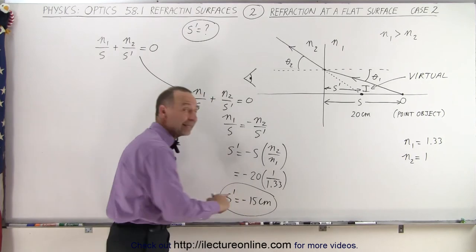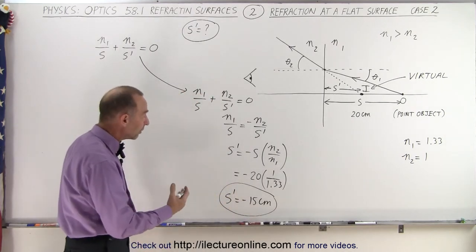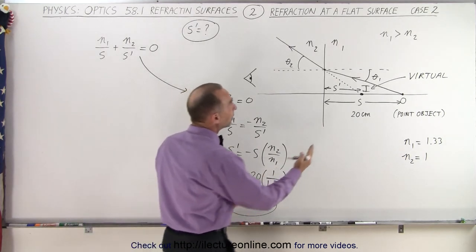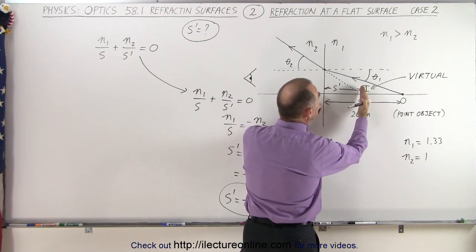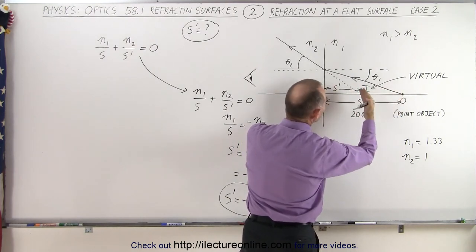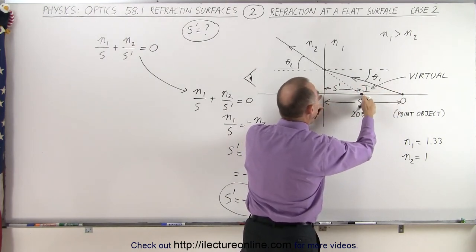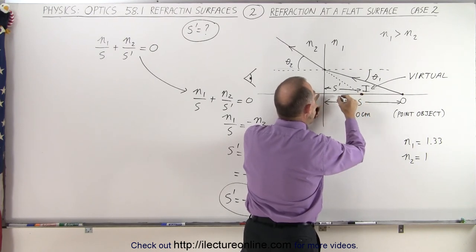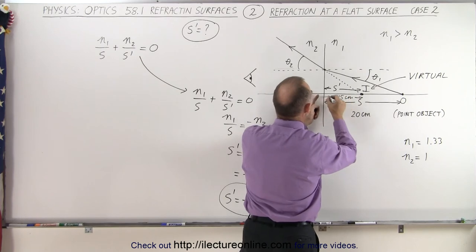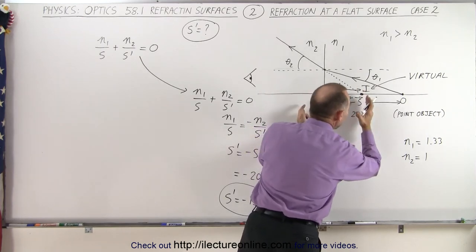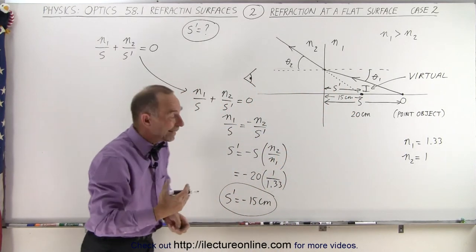Notice negative indeed indicates that it's a virtual image. 15 centimeters means that it's closer to the boundary than the object is. Of course, I didn't quite get it right, but that's quite fine. And so notice that this here is equal to a 15 centimeter distance from the image to the boundary. But since it's on the same side, that means S' is actually a negative number, therefore a virtual image.